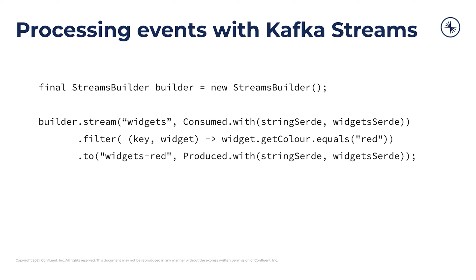Finally, to produce it to your output topic — your widgets-red topic — all you do is call to(), specifying the type: a string key and the widget value. And that's it, you're done. It's really a lot less code and a lot easier to wrap your mind around.